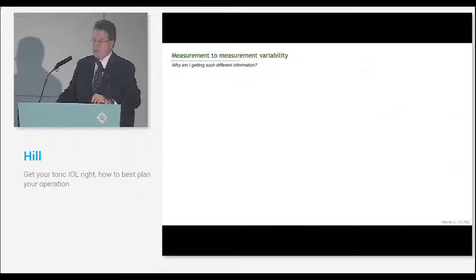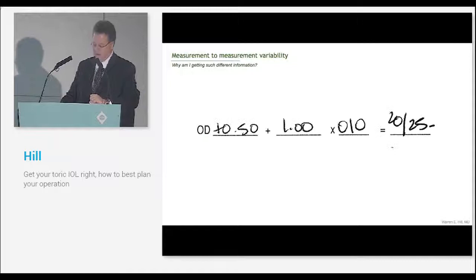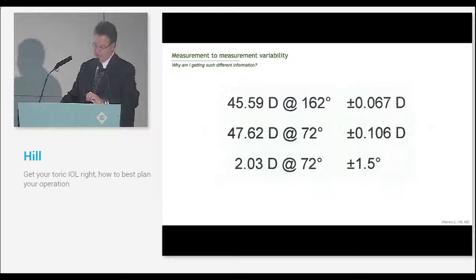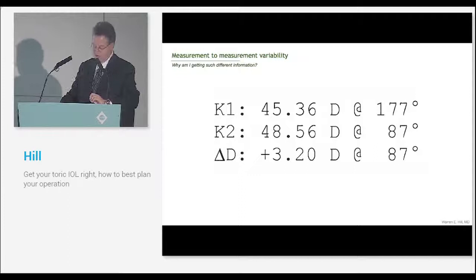One of the biggest problems is what information do we use for the preoperative measurements? I'm going to show you some information and I want you to take a look at the magnitude of astigmatism and the axis for all of these. Here's one way we get information - this is the patient's refraction. This is against the rule astigmatism about a diopter. This is with the rule astigmatism about two diopters. This is oblique astigmatism of about a little more than 0.75 diopters.